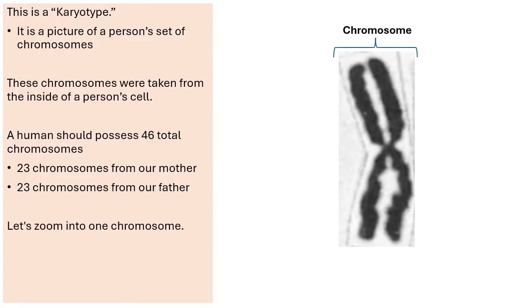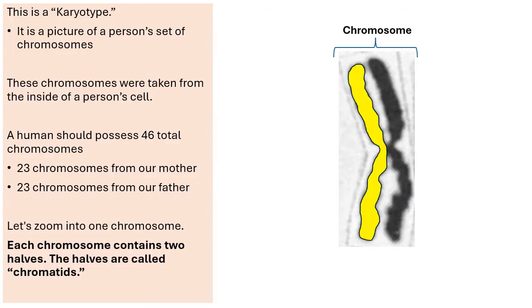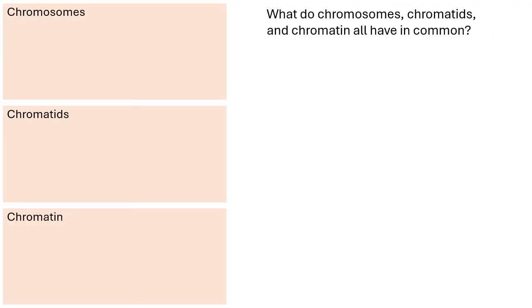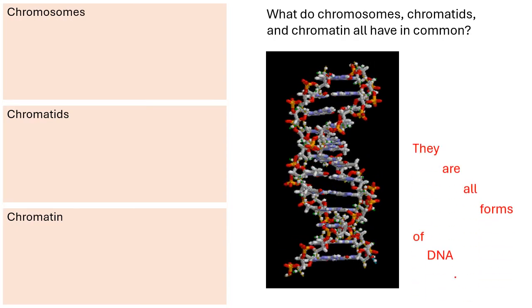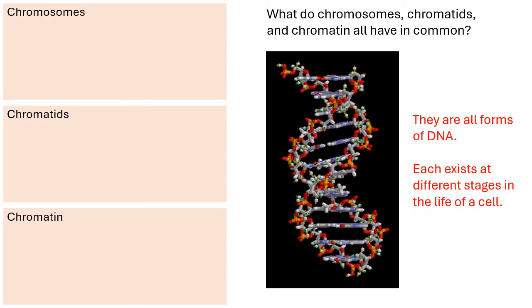When we zoom in, we can see that this is a chromosome. Each chromosome contains two halves — notice there's the left half blinking in yellow and the right half blinking in green. The two halves of a chromosome are called chromatids. They're combined in the middle area, and that location where they unite together is known as the centromere. One chromosome possesses two chromatids.